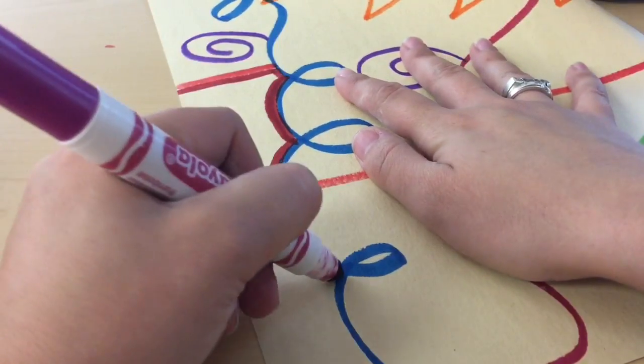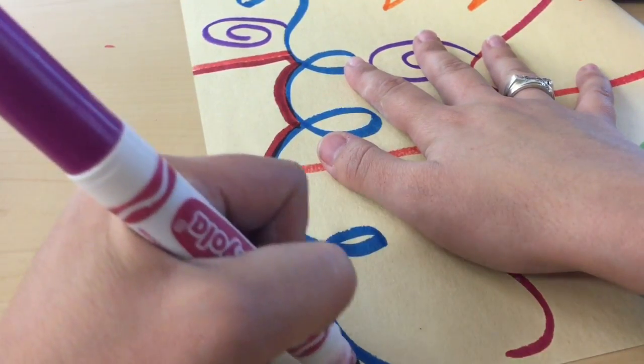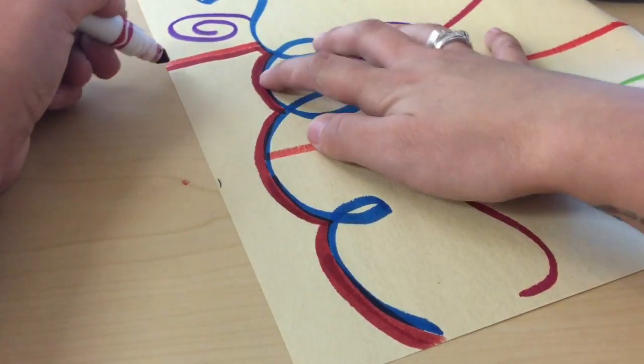If you go too fast, the marker doesn't have time to soak into the paper and it will always look like the marker is dead.